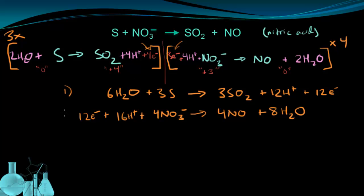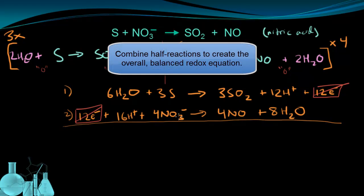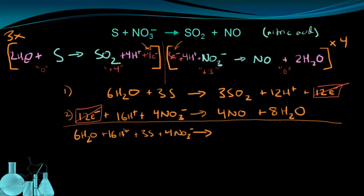Here I have the first half-reaction and the second half-reaction stacked on top of each other, and I'm ready to combine them into a single equation. I can first eliminate the 12 electrons on each side — the same number on opposite sides cancels out. Combining everything else, on the left side I have 6H₂O + 16H⁺ + 3S + 4NO₃⁻, and on the right side 3SO₂ + 12H⁺ + 4NO + 8H₂O.